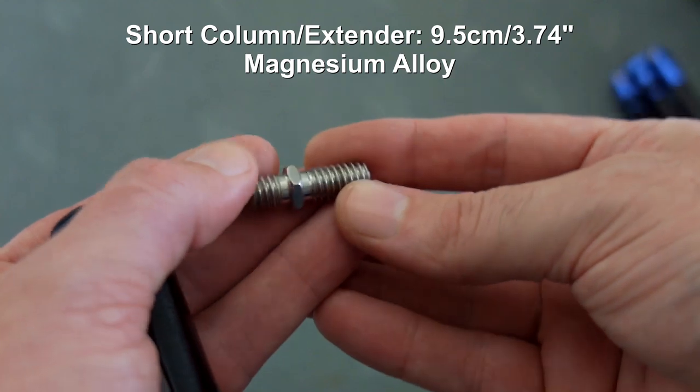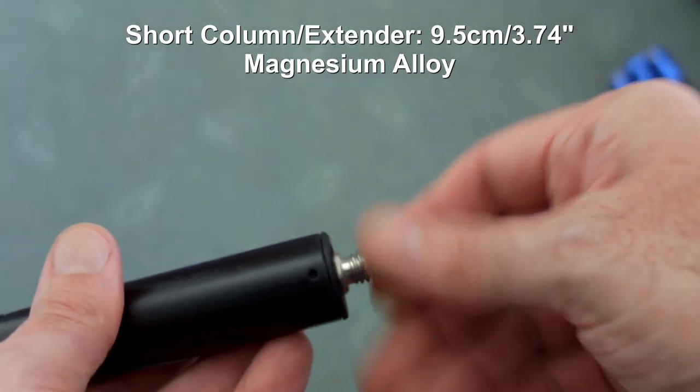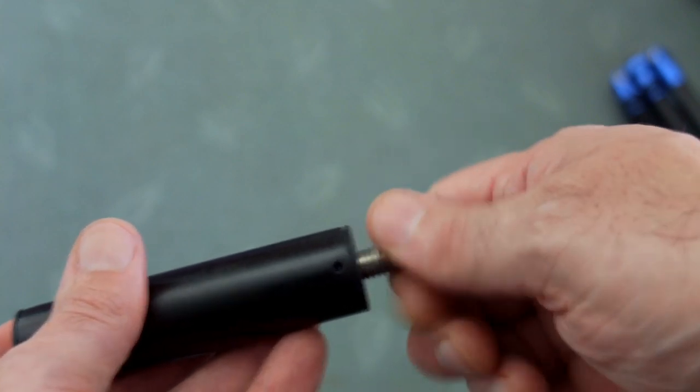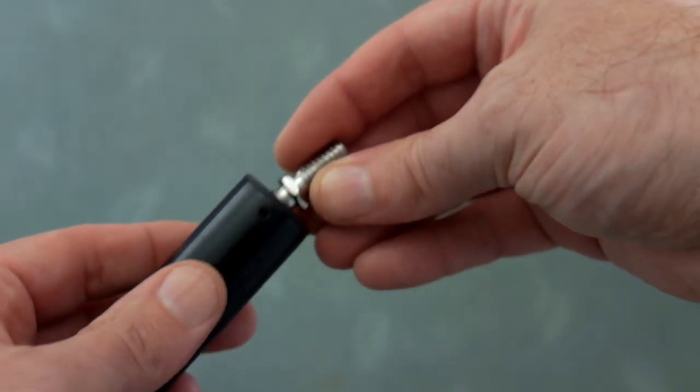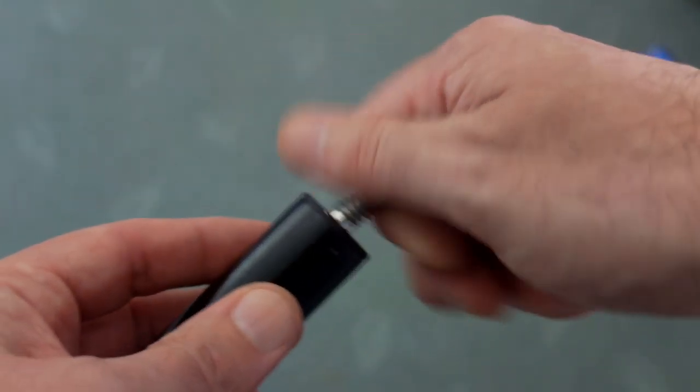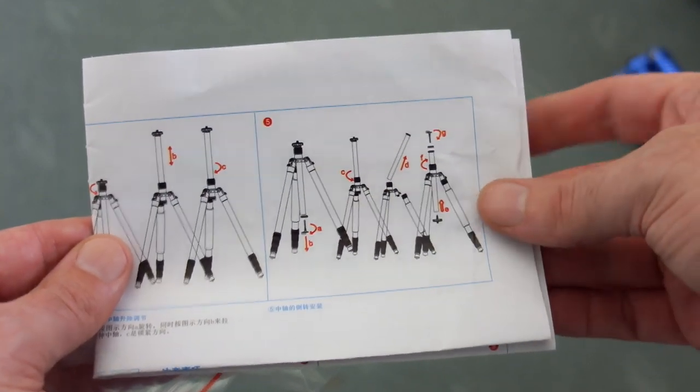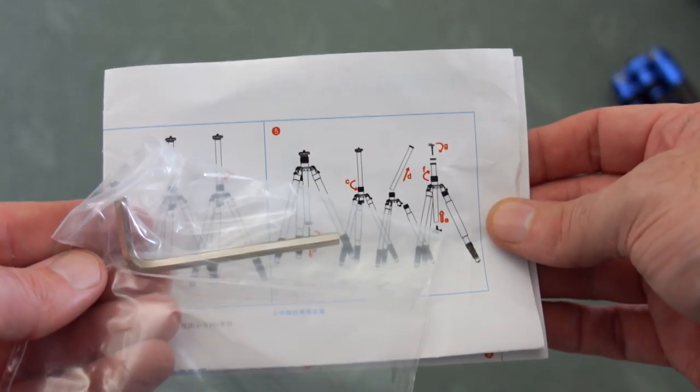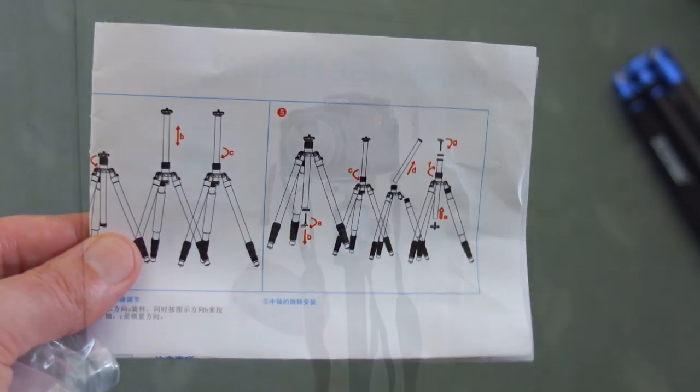You get a double-sided thread here which is used with the extender. The extender can be used as that, or it can replace the central column on its own. So that's worth having. It's a slightly different design from some of the smaller models that I've looked at. Instructions are quite basic. To be honest, they're not particularly good. The Allen key is here as well. The diagrams are a bit small.